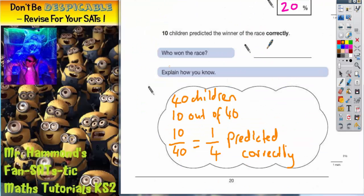So who won the race? It's Jack. Just to recap, it's because 10 out of 40 predicted correctly and 10 out of 40 is a quarter, and the only section that matches a quarter is Jack. That's the answer.